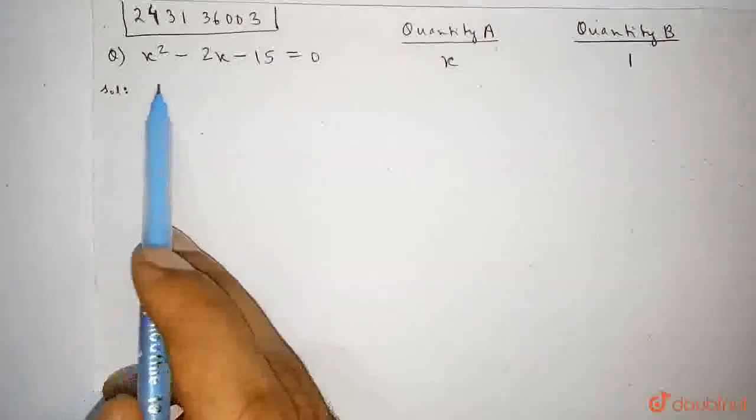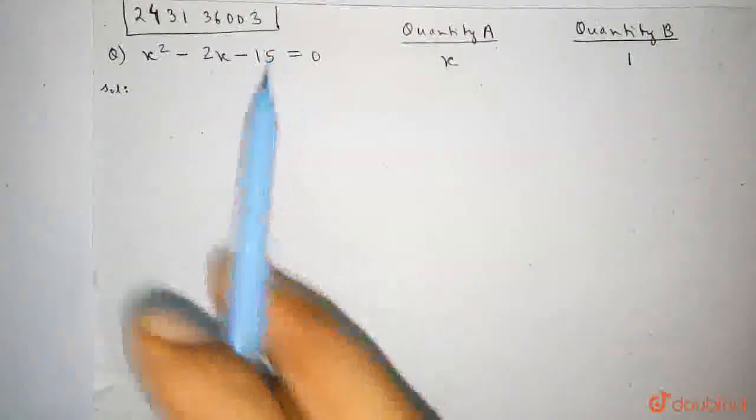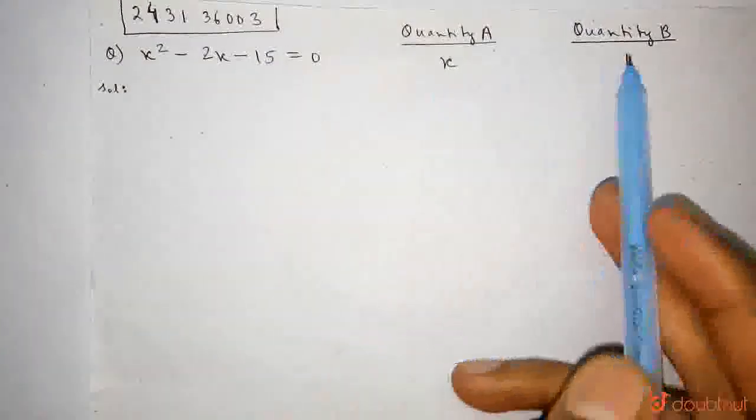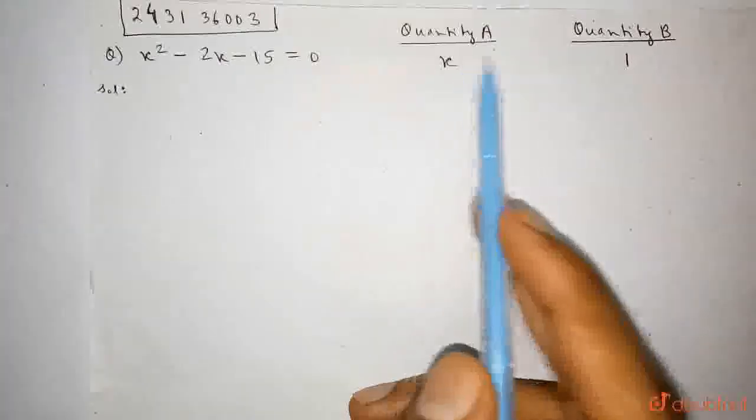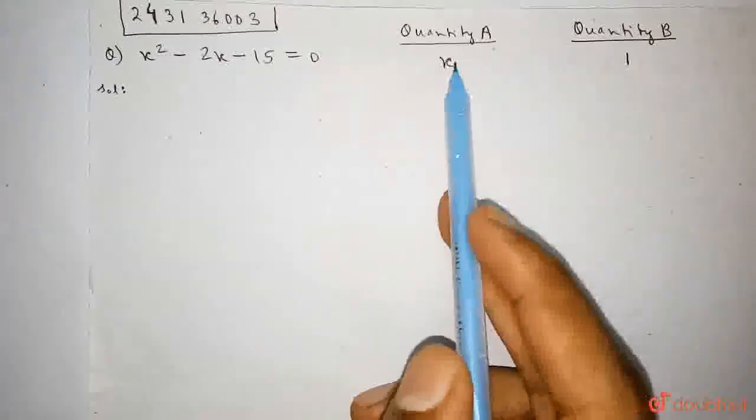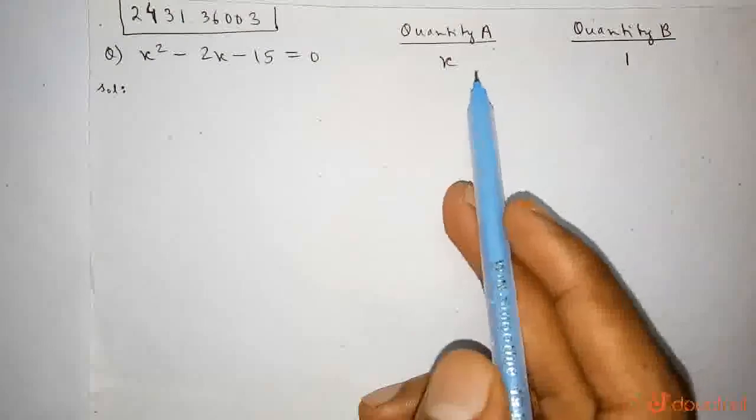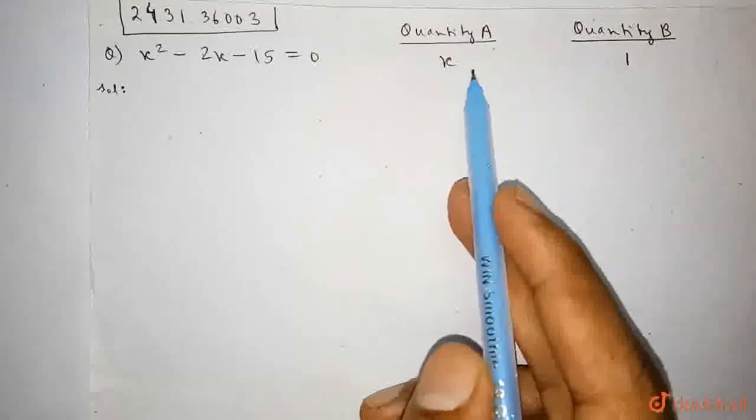This question is asked: x square minus 2x minus 15 equals 0, and quantity A is given as x and quantity B is given as 1. We need to decide whether quantity A is greater or quantity B is greater, or if they are equal, or we can't decide which one is greater.